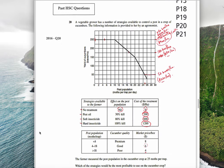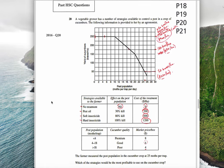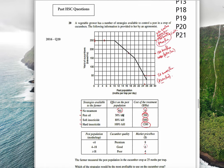The past HSC questions. This is a related question, question 20. It's very hard and requires you to look at information across three tables here. It says a vegetable grower has a number of strategies available to control a pest in a crop of cucumbers. The following information is provided to her.